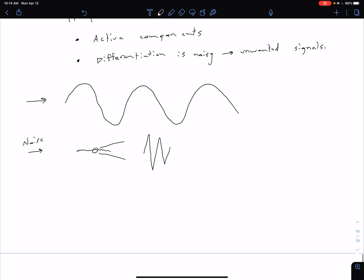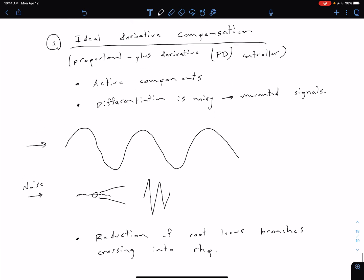What we're going to see too is we're going to have a reduction of root locus branches crossing into the right half plane. We'll see that more clearly with an example here in a little bit. That's ideal because that's going to give us more flexibility in terms of gain values that are going to result in stability of our system. Reduction of root locus branches crossing into right half plane. So that's our first method we're going to look at.